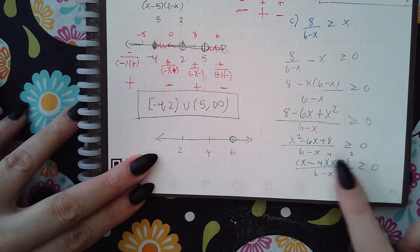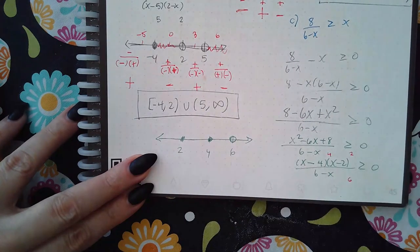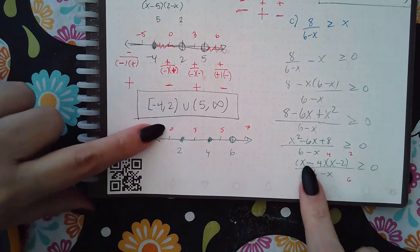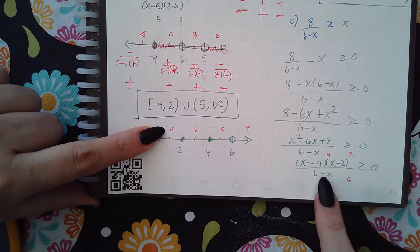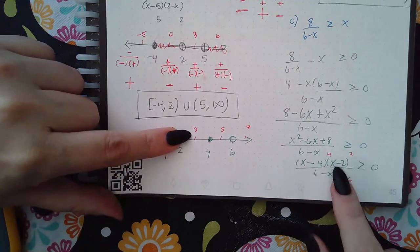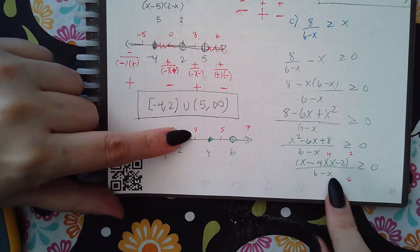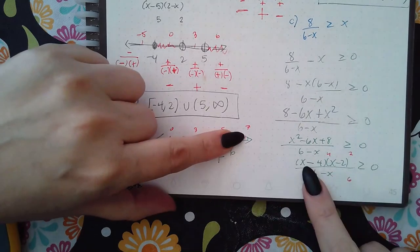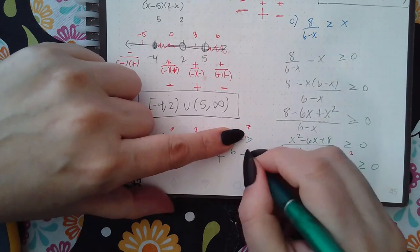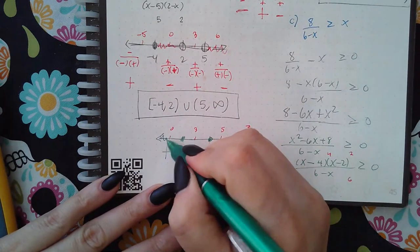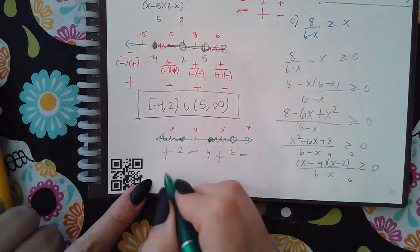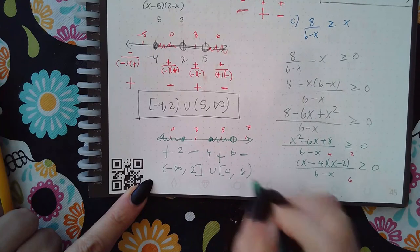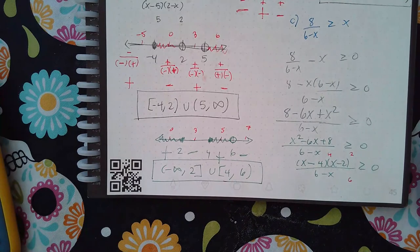The 6 gets an open dot, and the bar applies to the 4 and the 2 so those get solid dots. Now let's take our test points: 0, 3, 5, and 7. That's a negative times a negative over a positive — positive in the end. A negative times a positive over a positive is negative. Positive, positive, positive. Then positive, positive, negative. We want the ones that are greater than or equal to 0, so the answer is negative infinity to 2 with a bracket, then 4 with a bracket to 6 with a parenthesis.